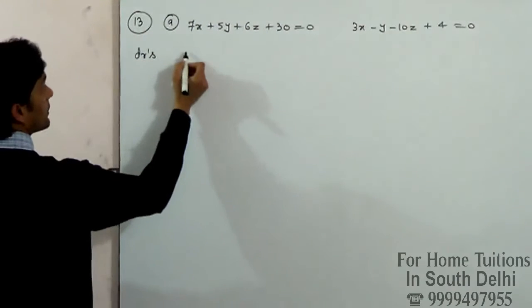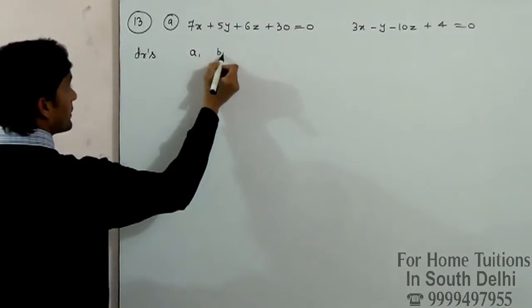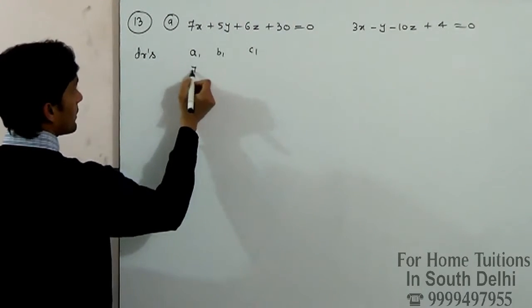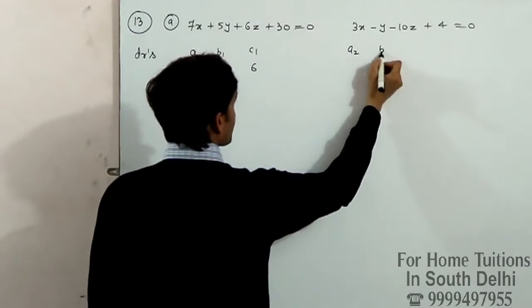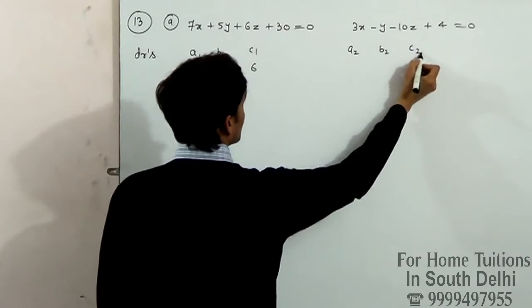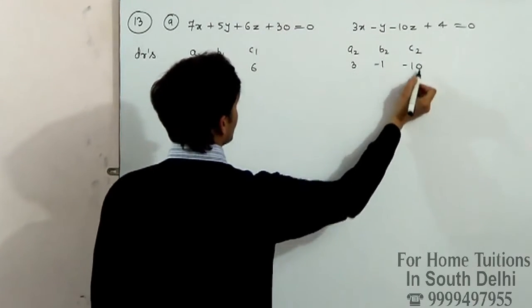Direction ratio for this one: A1, B1, C1 - what? 7, 5, 6. A2, B2, C2: 3, -1, -10.